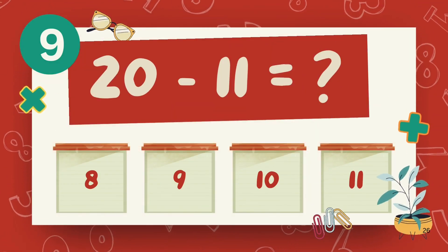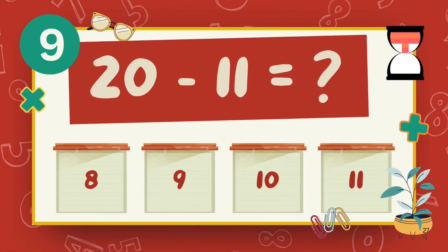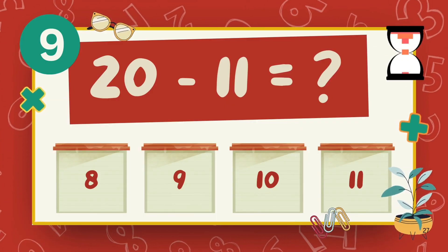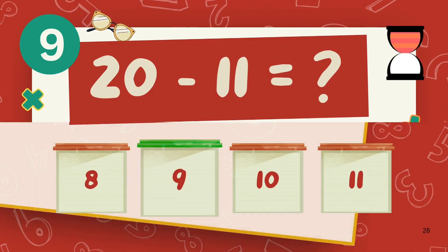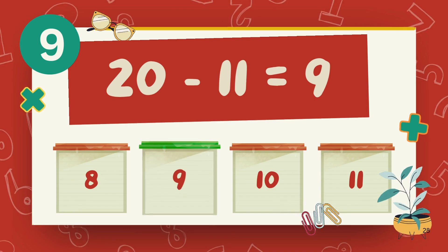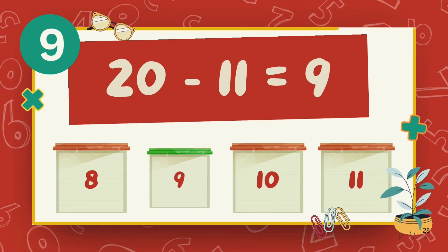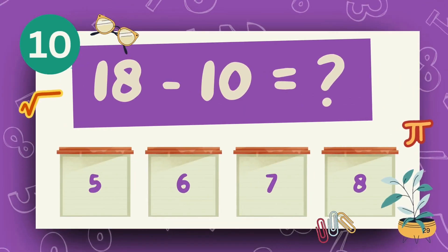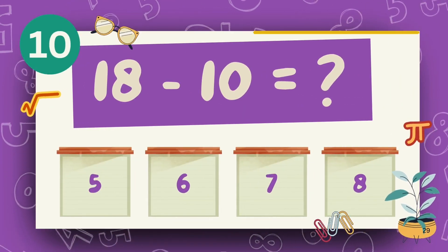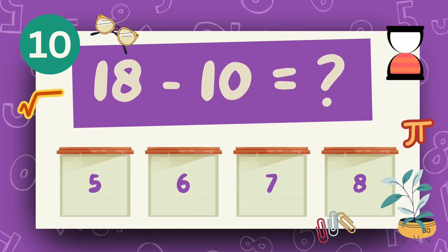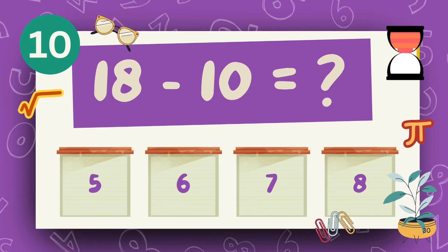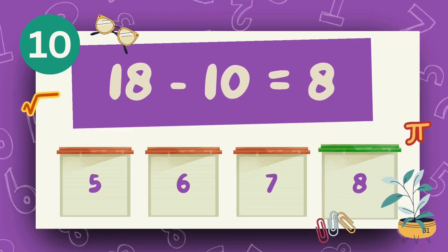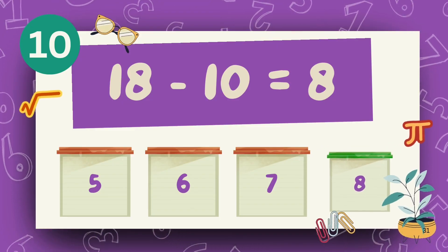What is 20 minus 11? The answer is 9. What is 18 minus 10? The answer is 8.